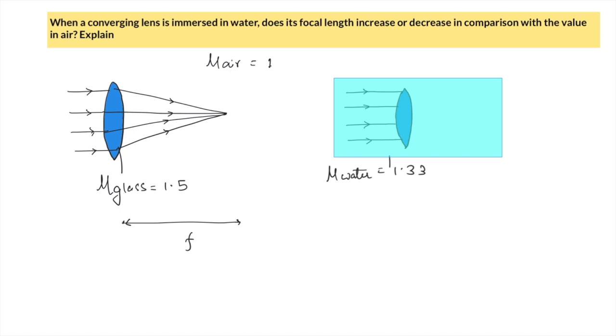Earlier it was going from 1.5 medium to air which is 1, hence the change of refractive index was large. But now, as it is placed in water, the ray of light is going from glass which is 1.5 to water which is 1.33, hence the bending capacity will decrease.